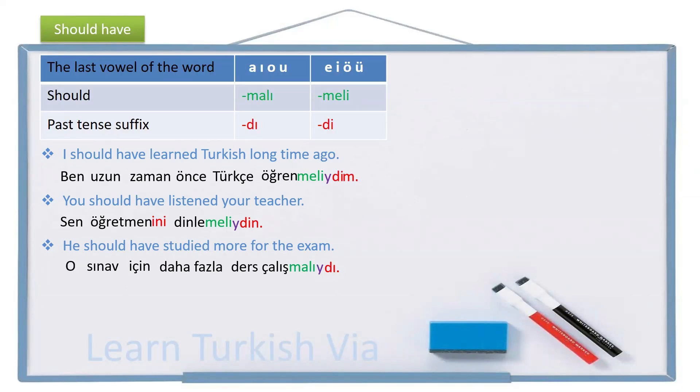And the last example. We should have gone to that concert. Obviously, we didn't and we regret about it. So, we, biz, that, o, concert, konser, to that concert, konsere. Go, git, should go, gitmeli, should have gone, gitmeliydi, with the buffer letter, gitmeli.